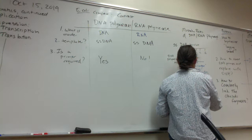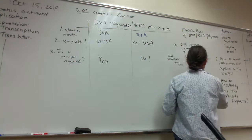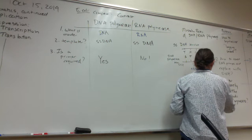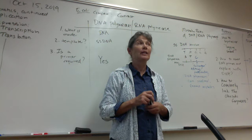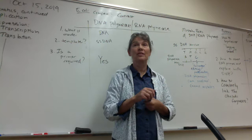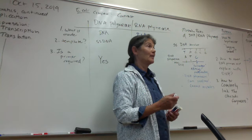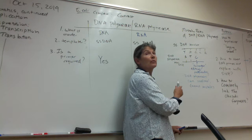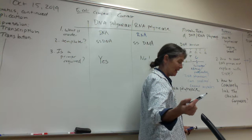Thank heavens DNA polymerase can proofread, because DNA is the genetic information of cells and gets passed on to all subsequent generations. If your DNA polymerase makes lots of mistakes, you'll end up with weird amino acid sequences in proteins, the proteins might not fold properly, and that could be lethal. But does RNA polymerase make copies of genetic information for cells? No. So RNA polymerases don't proofread — they don't need to. If we make a little mistake in the RNA, it's not a big deal long-term for the cell.